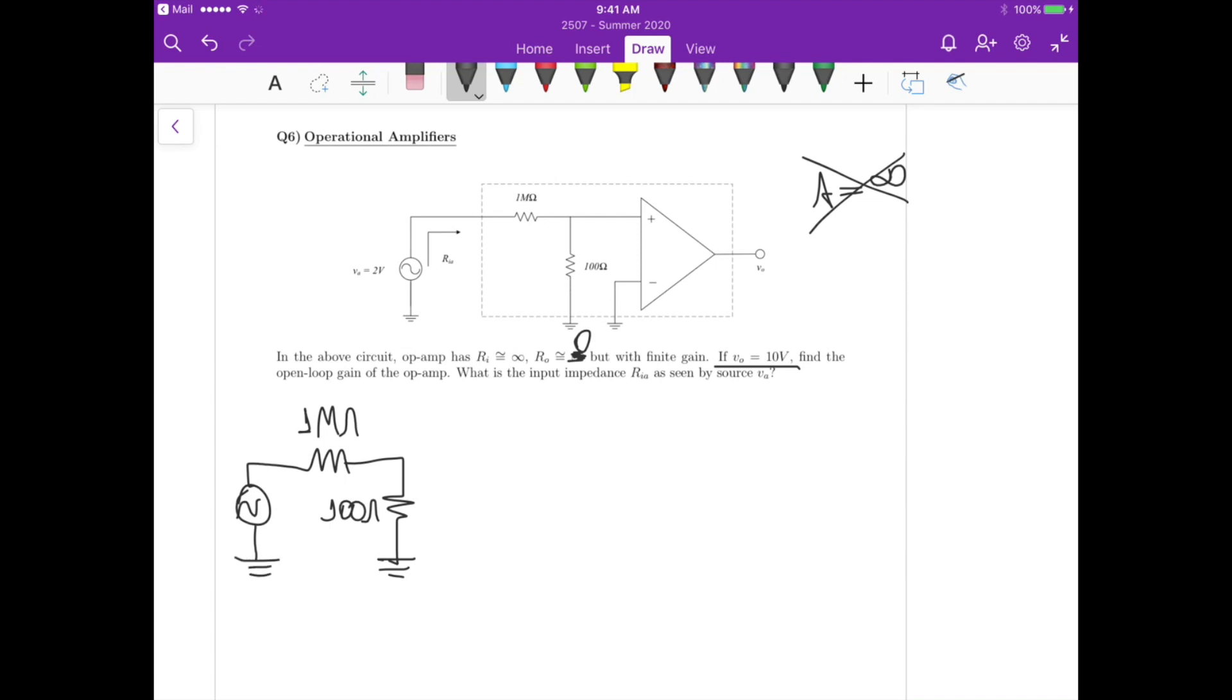This voltage source is 2 volts. Now for a non-ideal op-amp, basically here we go to the non-inverting input, then we have an input resistance that in our case is still infinite. This connects to the ground, so this R_i here is close to infinite, and then we have this voltage here that I will call V_i.